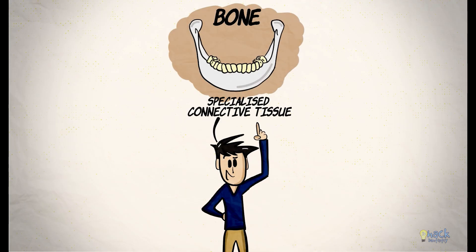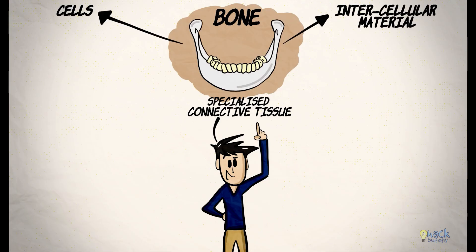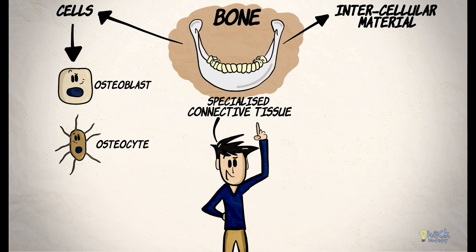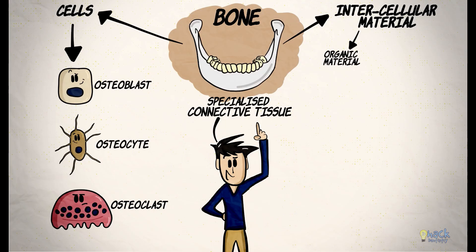Bone is a specialized form of connective tissue that consists of cells and intercellular material. Osteoblasts, osteocytes and osteoclasts make up the cells of the bone, while the intercellular material is made of organic and inorganic material.